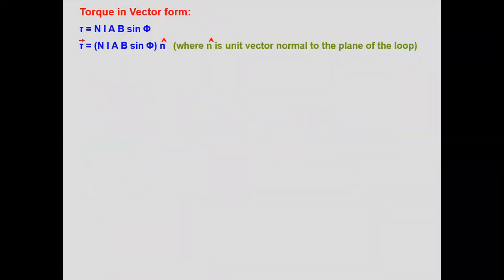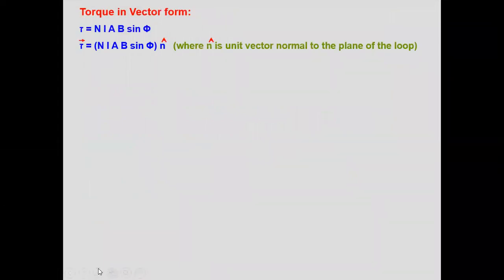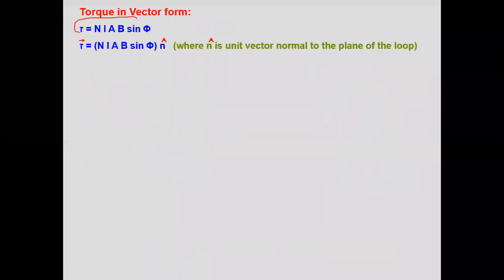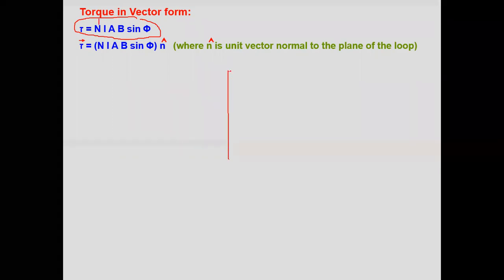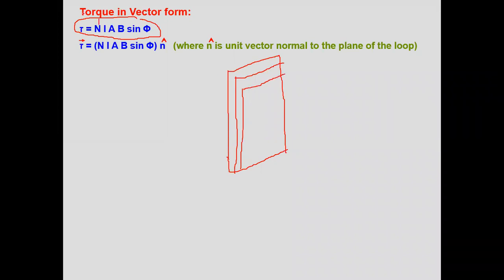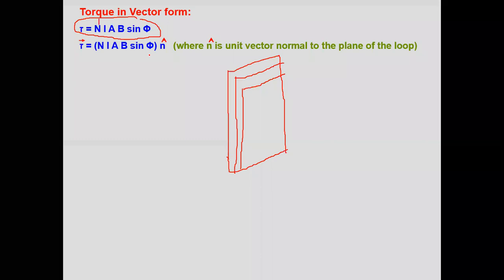Now let's see how to represent the torque in vector form. We have torque τ = NIAB sin φ, where N is the number of turns — this was derived for one coil. If there are N number of rectangular coils, you multiply the torque by N to get total torque. For vector representation: a vector is defined as magnitude times direction. Here, N-cap is the unit vector normal to the plane of the loop.